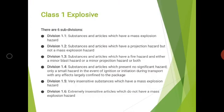Class 1, explosives, is divided into six subdivisions: divisions 1.1, 1.2, 1.3, 1.4, 1.5, and 1.6. Divisions 1.1, 1.2, and 1.3 share the same symbol, whereas divisions 1.4, 1.5, and 1.6 each have their own symbol. Division 1.1 covers substances which can cause a mass explosion, and 1.2 includes substances that can cause projection hazards.